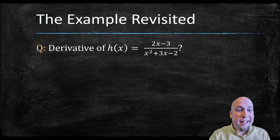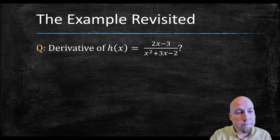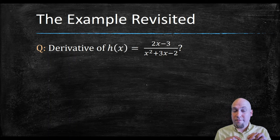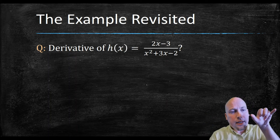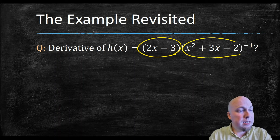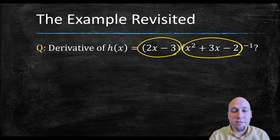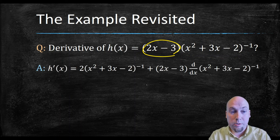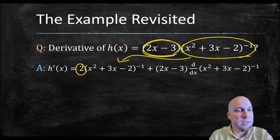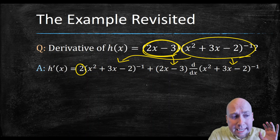To drive that point home, let's go back to the exact same example and find its derivative without using the quotient rule. This is the same function: 2x minus 3 divided by x squared plus 3x minus 2. The trick to avoid using the quotient rule is to write it as the top times the bottom to the power minus 1. So that's 2x minus 3 times x squared plus 3x minus 2, all to the power minus 1. Now that you have it as a product of two functions, you use the product rule: derivative of the first — derivative of 2x minus 3 is just 2 — times the second, plus the first — 2x minus 3 — times the derivative of the second.